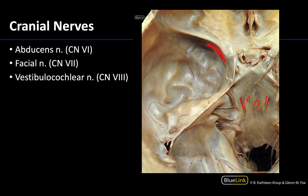The facial and vestibulocochlear nerves will enter the internal acoustic meatus, which I am outlining right here. The majority of the facial nerve will eventually exit the petrous part of the temporal bone, but the vestibulocochlear nerve heads towards the inner ear — it enters and never exits the petrous portion. It's really impossible to tell which nerve is which in this dissection, but you do need to know that both the facial nerve and vestibulocochlear traverse the internal acoustic meatus.